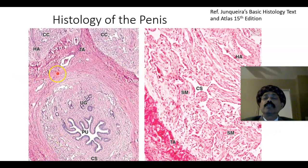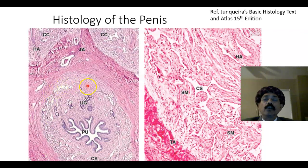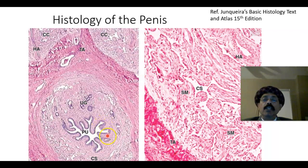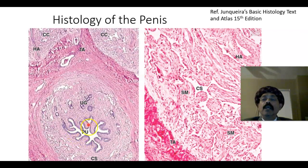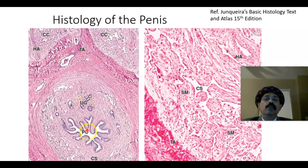In a histological section, this is the corpus spongiosum. This is the penile urethra, also called spongy urethra. It is lined by pseudostratified columnar epithelium, or it may be lined by stratified squamous epithelium — especially in the glans penis area, it is lined by stratified squamous epithelium. The penile urethra mucosa is folded, and it receives urethral glands called glands of Littré that open into the penile urethra.